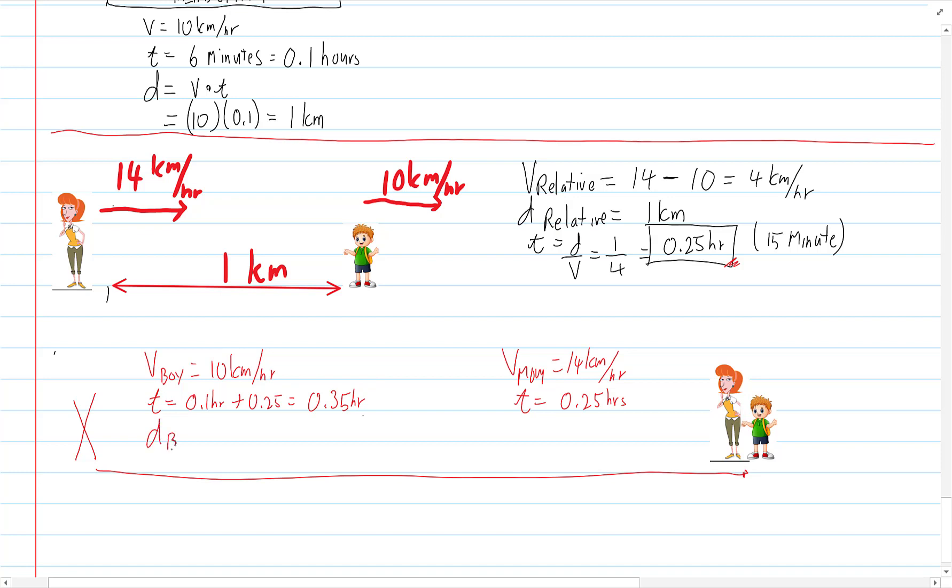So the distance the boy went is going to be velocity times time. 10 times 0.35. This looks like 3.5 kilometers. So the distance the boy has run is 3.5 kilometers on the way to school. Mom, she should have run the same amount. But let's just check. D is equal to velocity times time. So 14 times 0.25. A quarter of 14 is 3.5. Yay. Two different ways to check it.